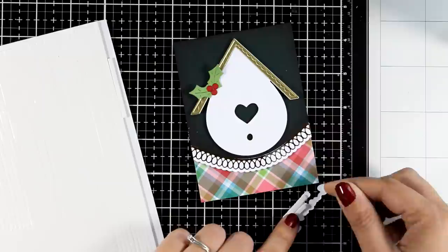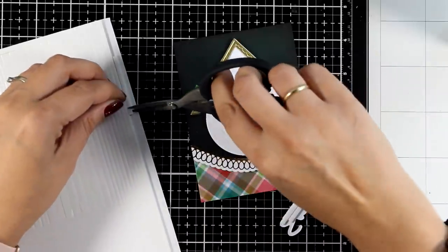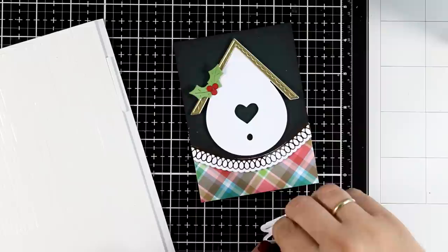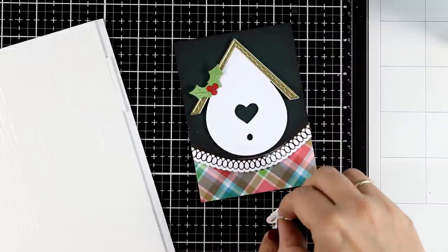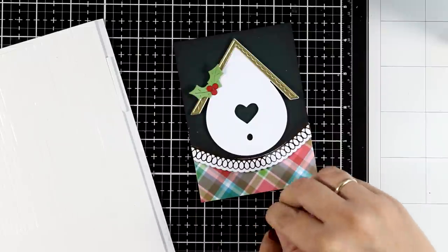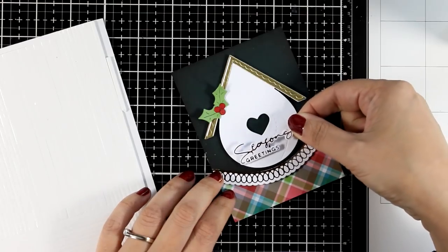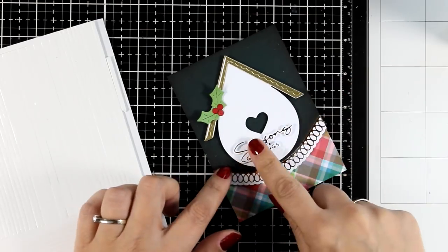Now I'm using thin strips of foam tape at the back of the sentiment and I will stick it on top of the birdhouse. I decided not to use a birdie for this card, I'm keeping it simple. I think it looks beautiful and it doesn't need a bird. Of course if you do have the bird die set you can definitely add a little birdie standing on top of the sentiment.